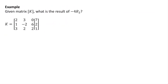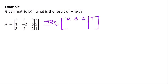Now, given matrix K, let's find the result of negative 4R2. Rows 1 and 3 stay unchanged. Multiplying every element in R2 by negative 4: 1 times negative 4 is negative 4, negative 2 times negative 4 is 8, 6 times negative 4 is negative 24, and 2 times negative 4 is negative 8.